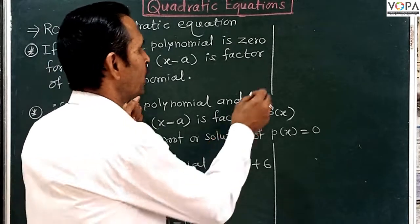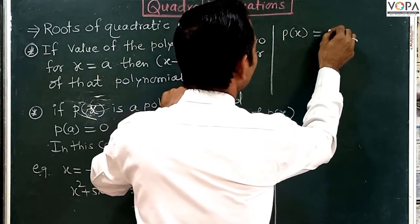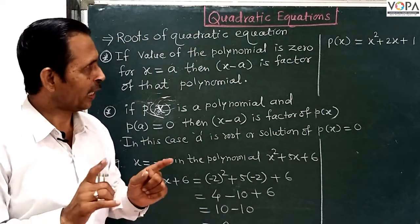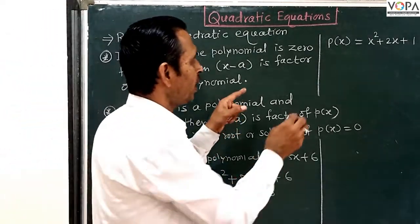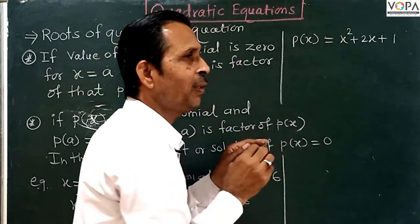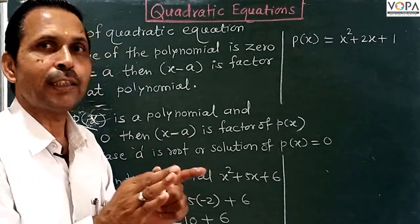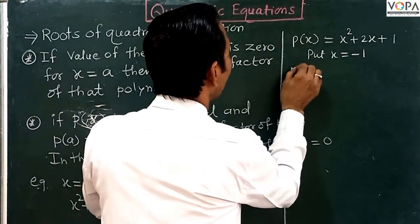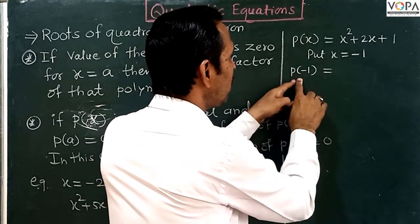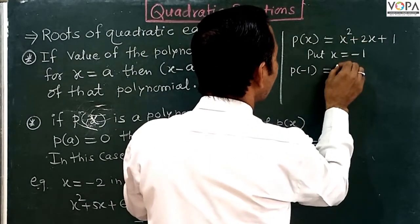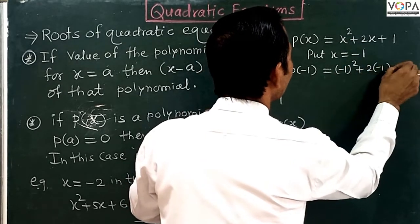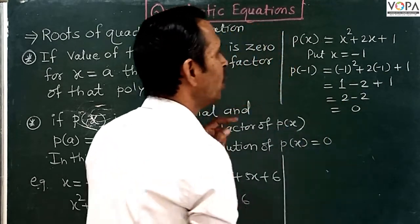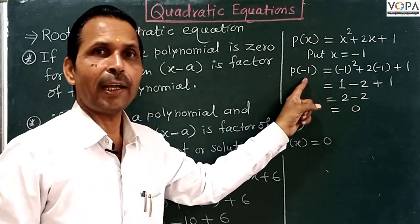Now, let's take the polynomial p(x) equal to x squared plus 2x plus 1. We need to find the values of x. If x is equal to minus 1, then we get: minus 1 squared plus 2 times minus 1 plus 1, which equals 1 minus 2 plus 1, which equals 0. The value of this polynomial for x = minus 1 is 0.